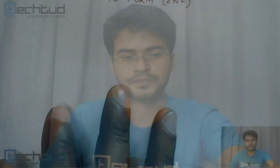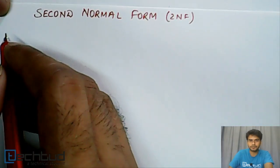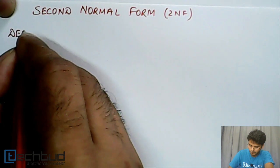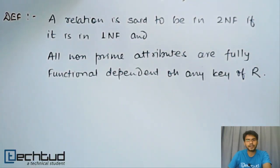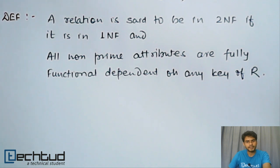Hello everyone, welcome back. In this lecture we will go through Second Normal Form. We have already understood the concept of First Normal Form, and now we will understand Second Normal Form. A relation to be in Second Normal Form has to satisfy the condition of First Normal Form — similar to how a student appearing in a class 12 exam must have already passed class 11 or 10. The formal definition says: a relation is said to be in Second Normal Form if it is in First Normal Form and it satisfies certain criteria.